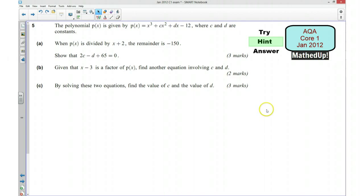Okay, for the next part of the video, I'm going to give you a hint as to how you can go about answering the question. So we're given that the polynomial is x cubed plus cx squared plus dx minus 12, where c and d are constants. And we're told that if we divide this polynomial by x plus 2, the remainder is negative 150. And we need to try and show this equation here.